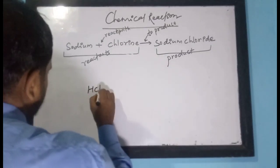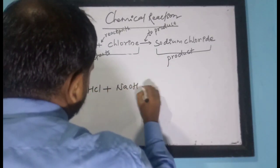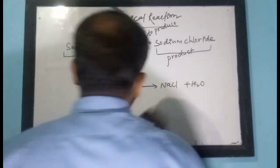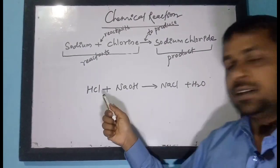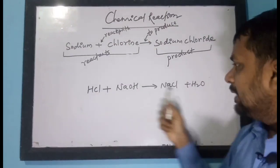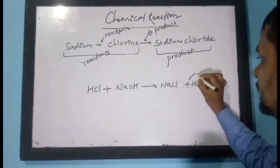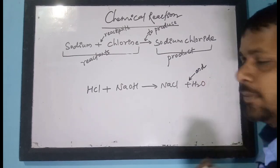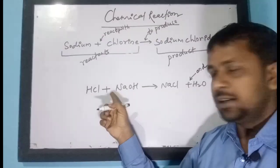The plus sign on the reactant side indicates 'react with.' And the plus sign on the product side means 'and.' So if the plus is on the reactant side, it means 'react with'; if the plus is on the product side, it means 'and.'